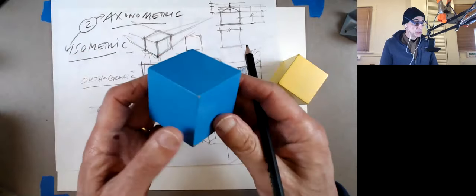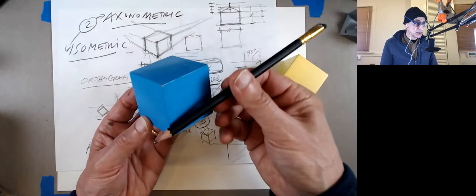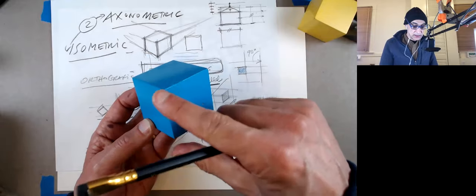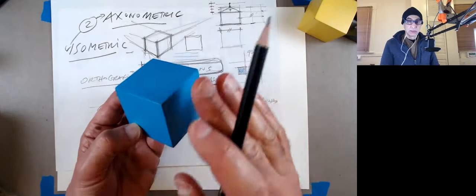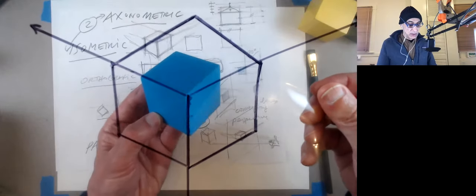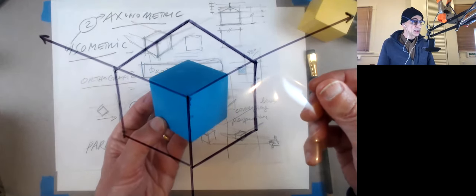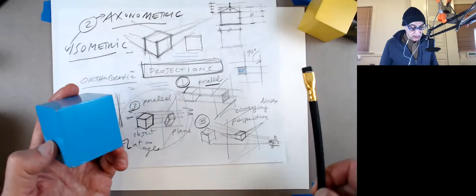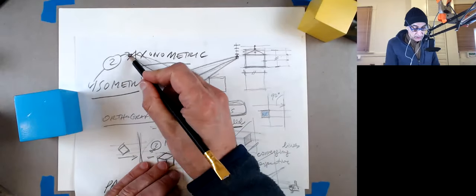Even though when I look at this cube through the camera — which simulates the eye — you can see that the lines are sort of converging. But for our purposes, for axonometric and isometric, we want to use those lines as being parallel, not converging. A perspective is when the lines converge into some vanishing point — in this case, two vanishing points, left and right.